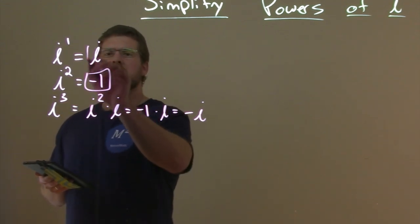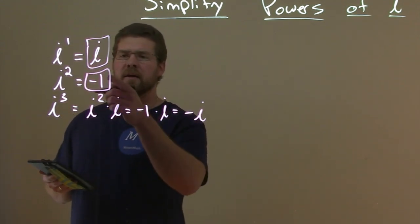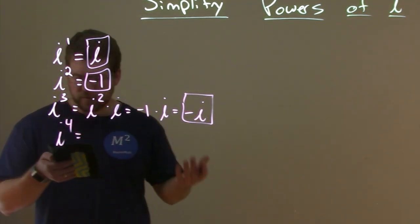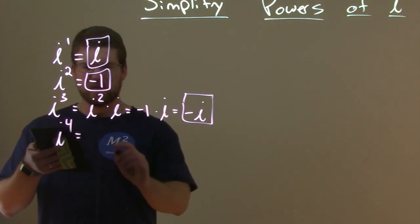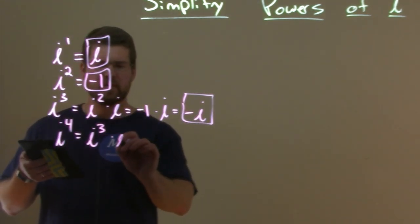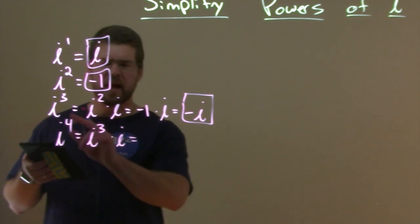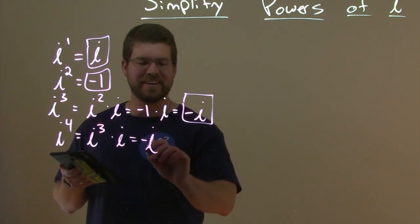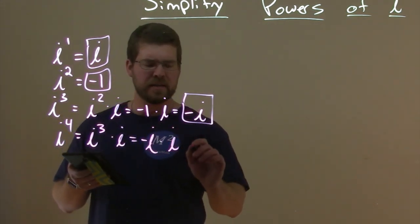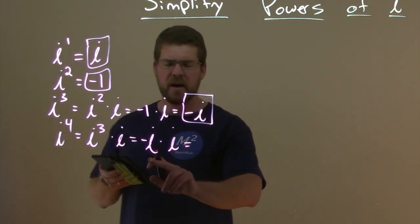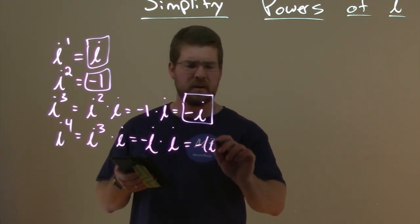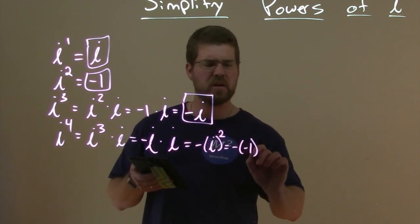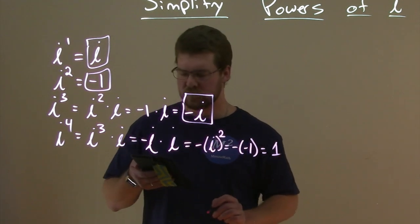So far we have i, negative one, negative i. What do you think i to the fourth power is going to be? Well, i to the fourth power is i to the third power times i. I to the third power we just found was negative i. So negative i times i is negative i squared, which is negative negative one, which is one.